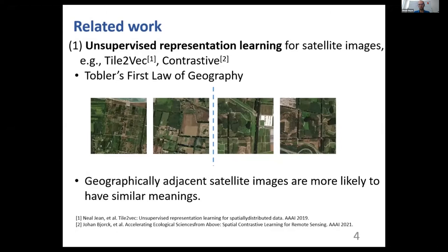The majority of existing studies follow Tobler's first law of geography. It states that everything is related to everything else, but nearer things are more related than distant things. In other words, geographically adjacent satellite images are more likely to have similar meanings and thus have similar representations.